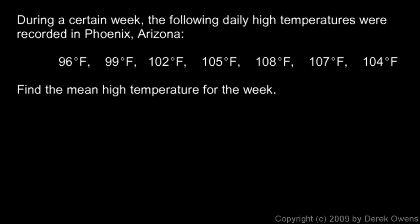In the next example, we're told during a certain week, the following daily high temperatures were recorded in Phoenix, Arizona, in degrees Fahrenheit: 96, 99, 102, 105, 108, 107, and 104. Those were the high temperatures each day for a seven-day period. Find the mean high temperature for the week—in other words, find the average high temperature for the week.